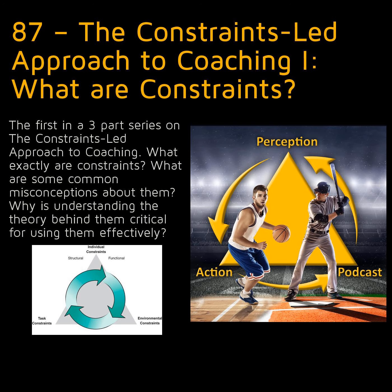In Newell's model, there are three types of constraints that a performer must accommodate when coming up with a movement solution: environmental, task, and individual. These three constraints are commonly depicted as the vertices of a triangle. Environmental constraints are things that are typically not manipulated by a coach and that are relatively time-independent — they don't really change very quickly. Things like gravity, temperature, and light level. These could be thought of as the ambient conditions in which a particular task is being performed.